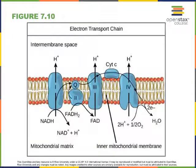The electron transport chain is a series of proteins embedded in the inner mitochondrial membrane that shuttle electrons from NADH and FADH2 in order to reduce molecular oxygen producing water. Starting with the first complex known as complex 1, also known as NADH ubiquinone oxidoreductase.